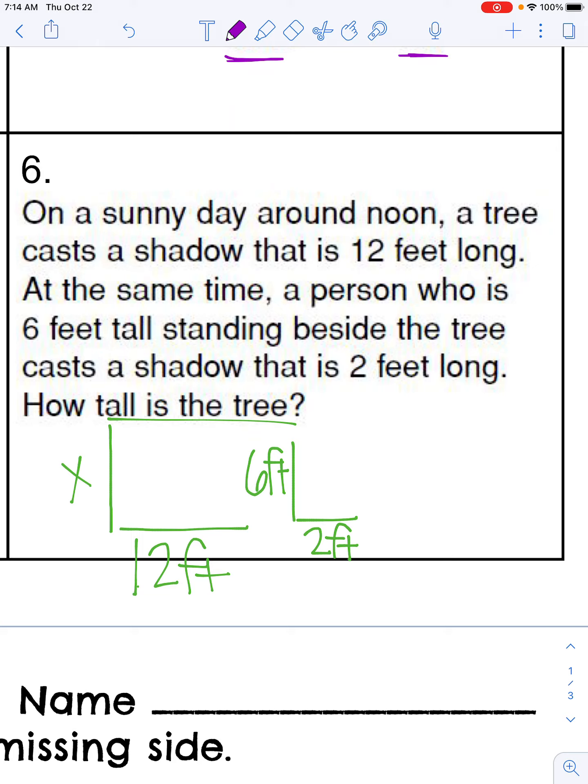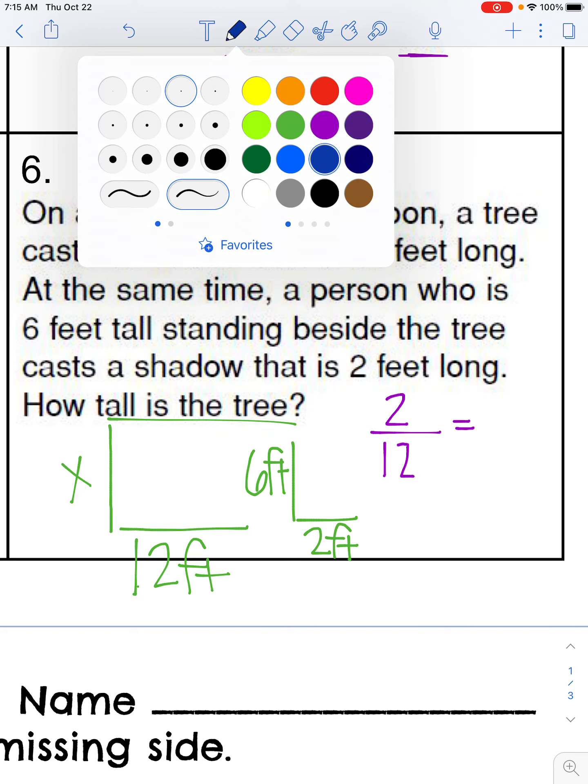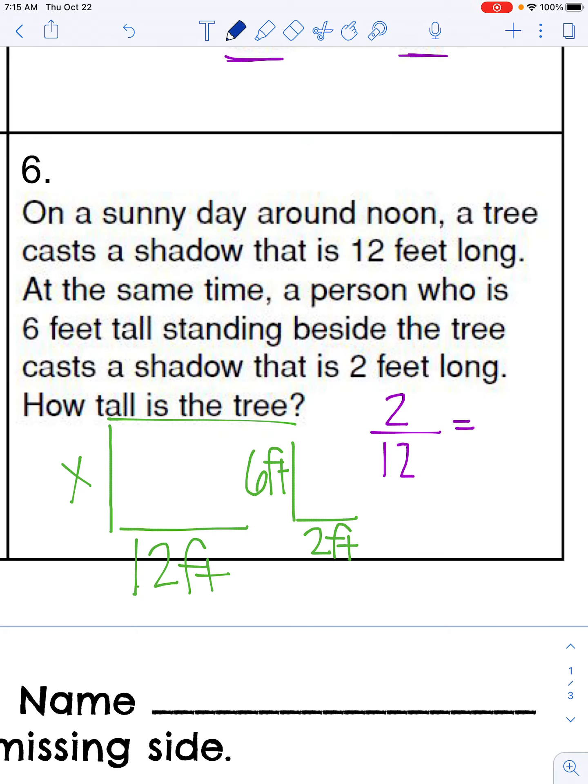So we can set up our proportion here. We know that our shadow for the person is two feet, and our shadow for the tree is 12 feet. And then we know that our tree is the one that we're looking for. So our person is six feet tall, and then we're looking for how tall the tree is, which is our X value.